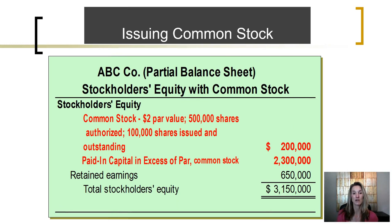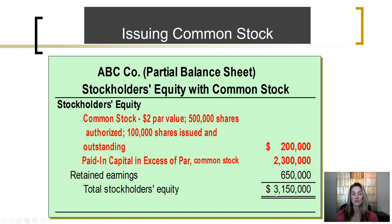If we look at the balance sheet in the equity section after the issuance of this stock, we would see common stock reported with the par value per share, how many shares the charter authorizes them to issue, the number of shares issued thus far, and these shares are still outstanding — still held outside the corporation by owners. Total par value of common stock issued is $200,000. Owners paid in $2.3 million in excess of par when the stock was sold. The company also has retained earnings of $650,000. Total stockholders' equity is the combination of paid-in capital plus retained earnings, totaling $3,150,000 as of the date of this balance sheet.